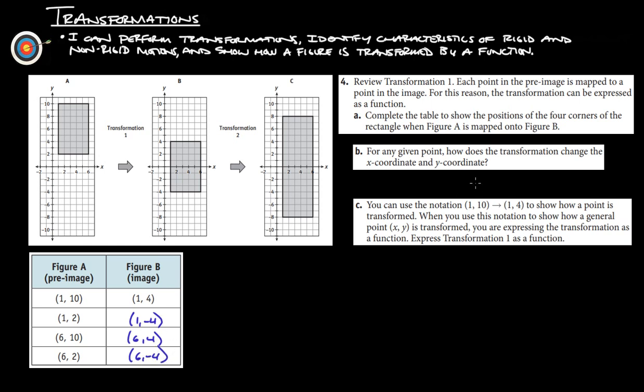So, it now says, for any given point, how does the transformation change the x-coordinate and the y-coordinate? So, the x-coordinate, you can see, stays the exact same. And then, the y-coordinate, if you'll notice, we go from ten to four. So, we subtracted six. Two to negative four, we subtracted six. So, everything, all the y-coordinates, are moved down six or subtracted by six.